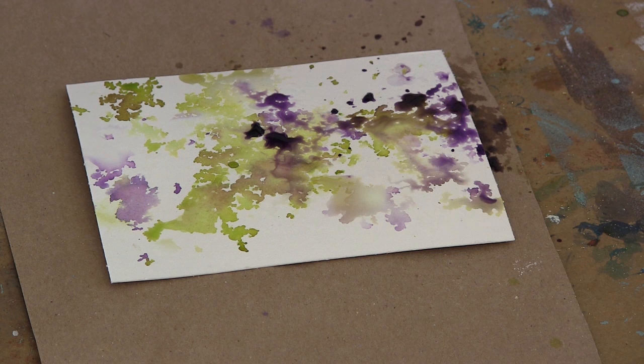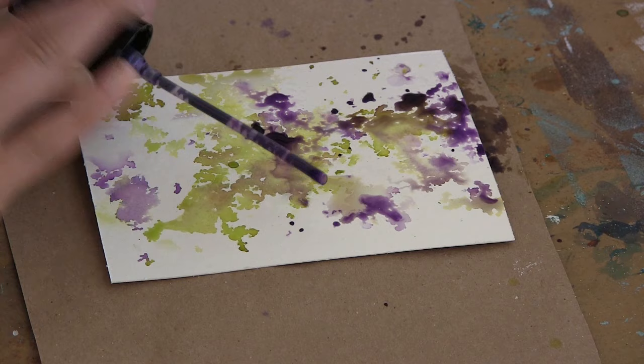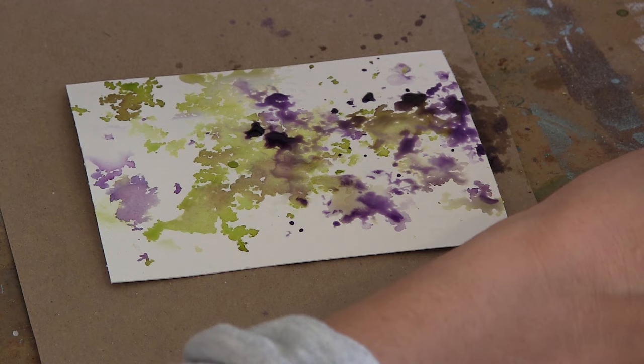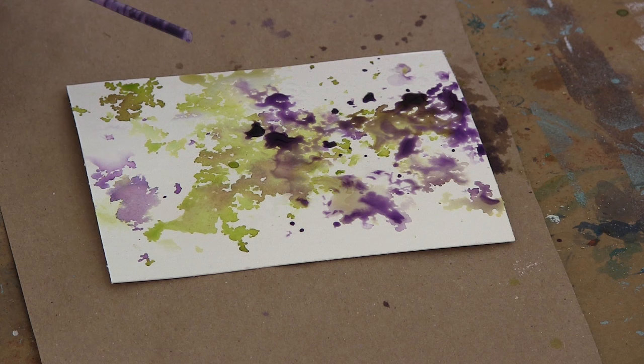And depending on what you're going for, I think it's nice to have areas that are on the dark side. So that you have a nice range of color. And when the white die cut is placed on top, the really dark areas underneath will help those shapes pop.